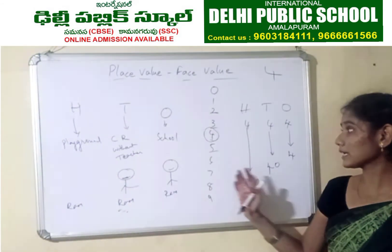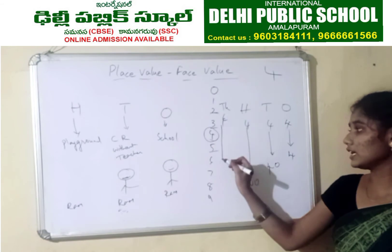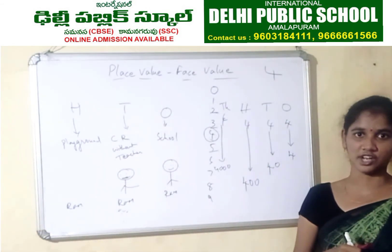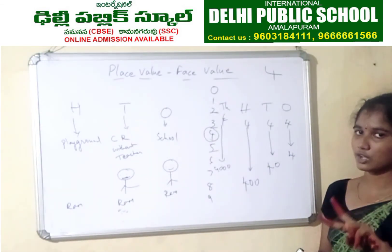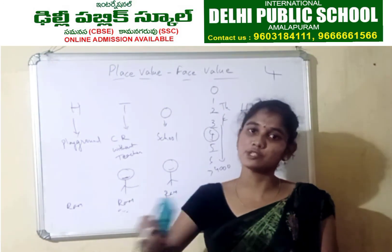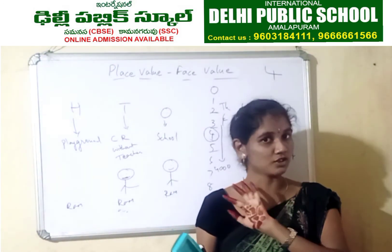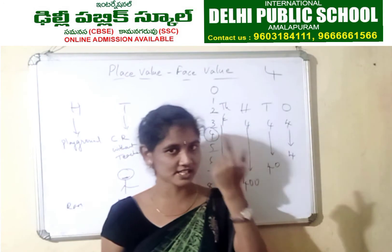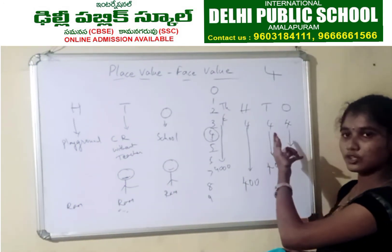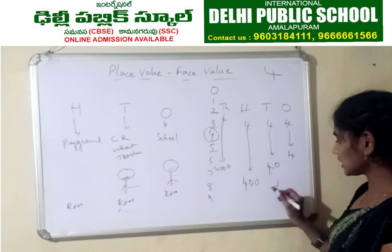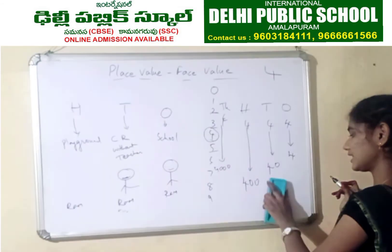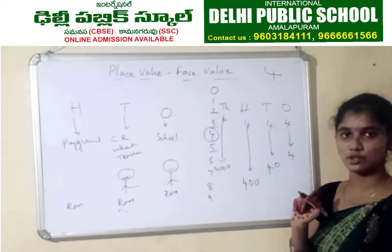In the ones place it is not getting any power — so it is the same. When it went to tens place it became 40. When it goes to hundreds place it became 400. And if it goes to thousands place, it will become 4000 — it will get more powerful. This is the difference between place value and face value. Place value always changes from place to place, but face value never changes. When I come from here to here, is my face changing? No — in the same way, the shape of the number will not change. Four remains four only.